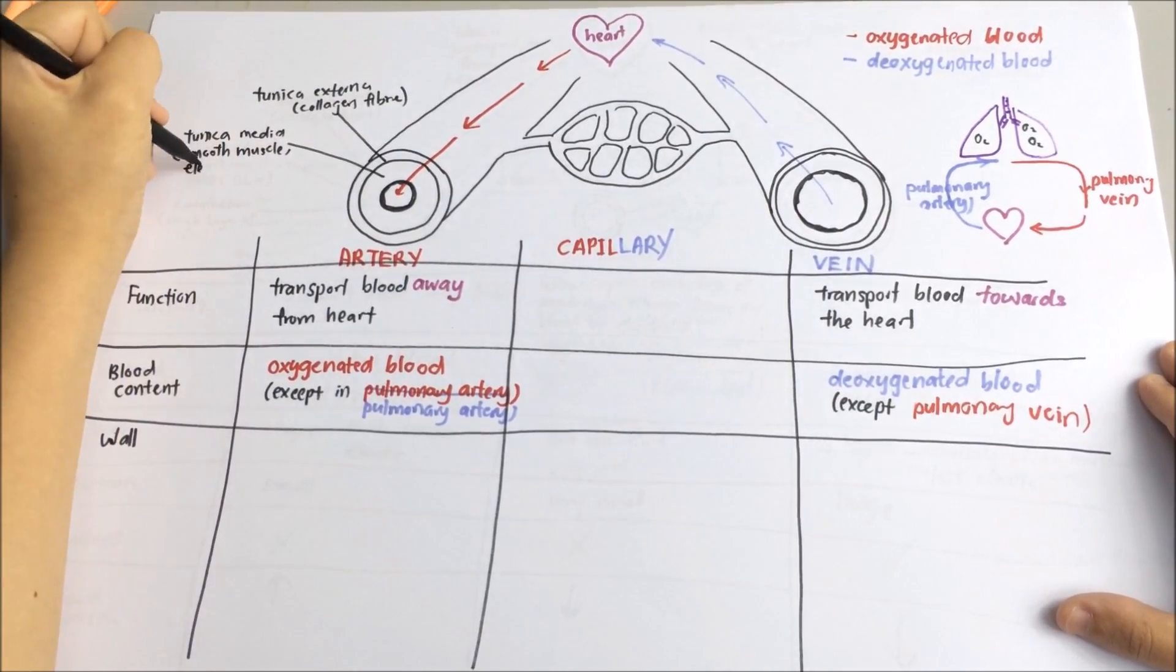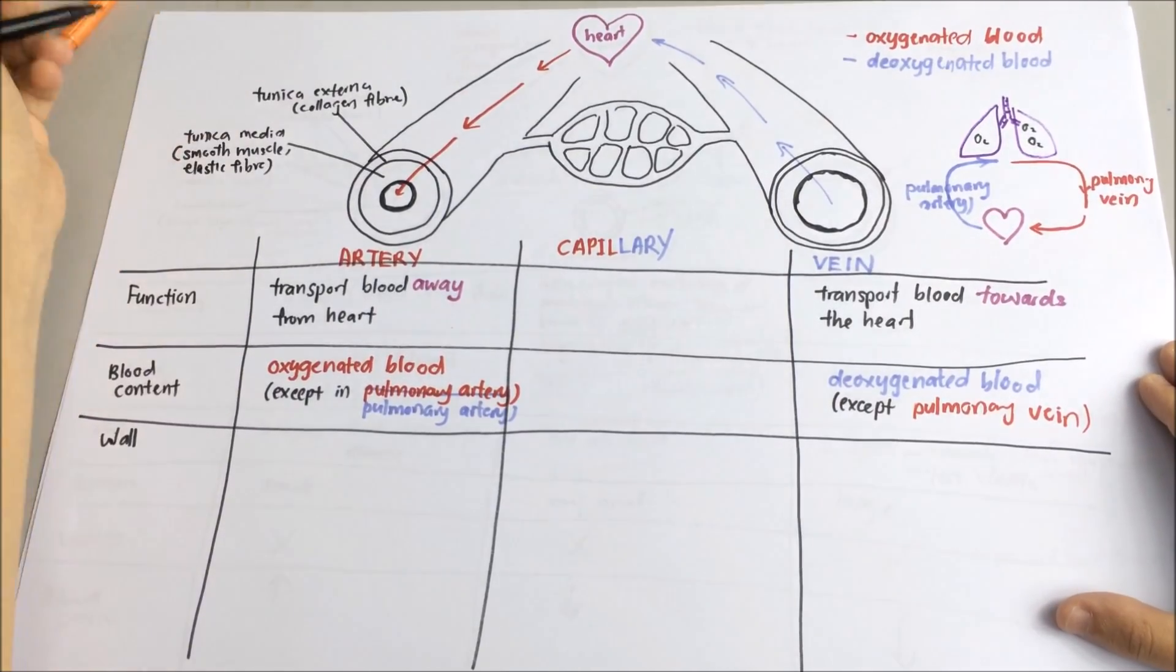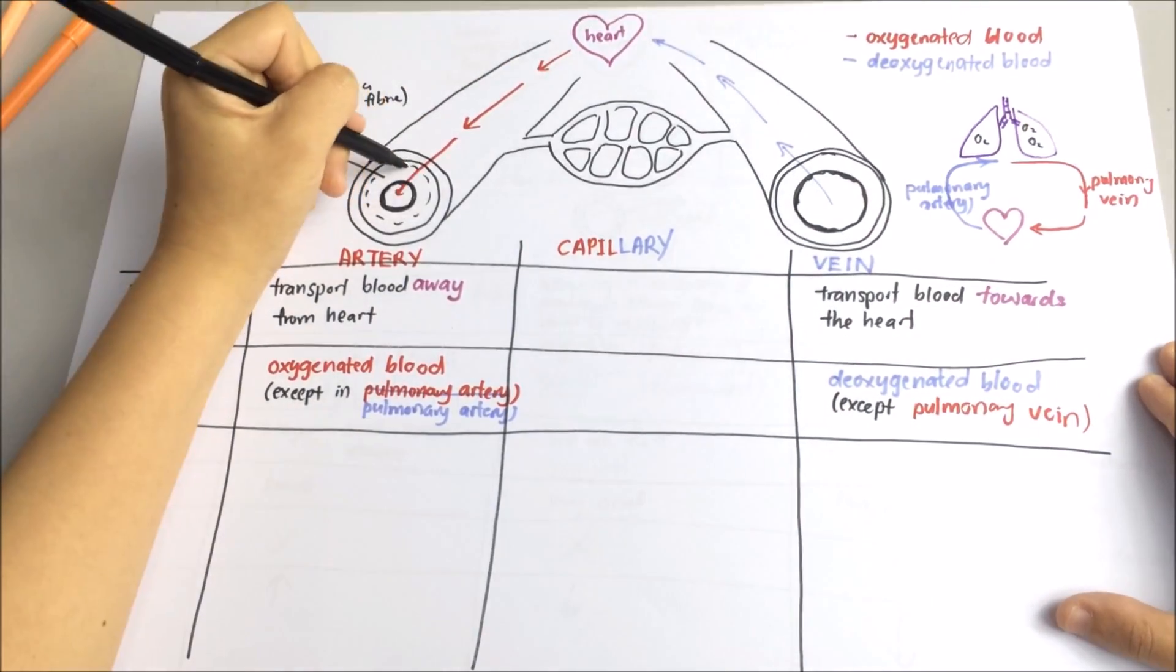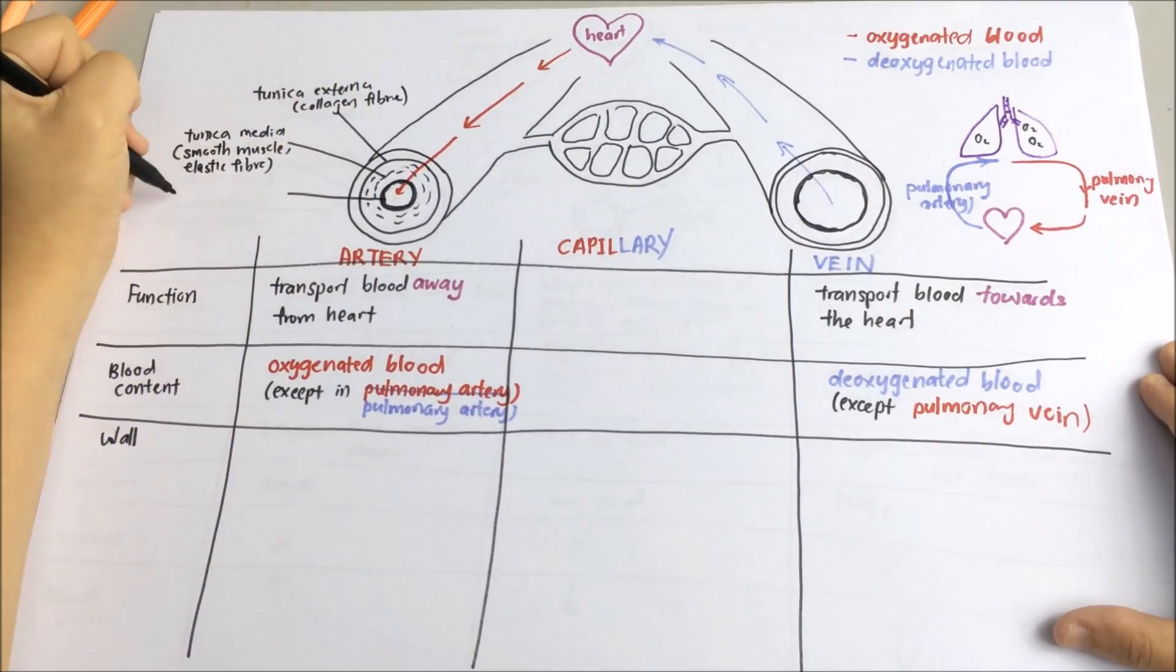The innermost layer is known as endothelium. It consists of a single layer of cells.